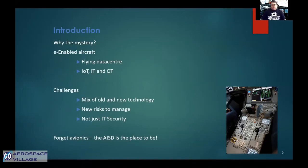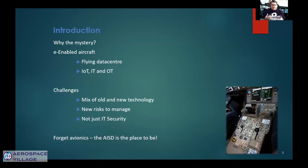Logically, the AISD sits in between the aircraft control domain and the passenger information and entertainment systems domain, both known as the ACD and the PIESD. This is essentially what makes an aircraft what's known as E-enabled. E-enabled means that the aircraft will integrate with the airline IT systems to provide significant cost savings to the business. It allows remote maintenance and uploading of software updates, which is a key time saver.